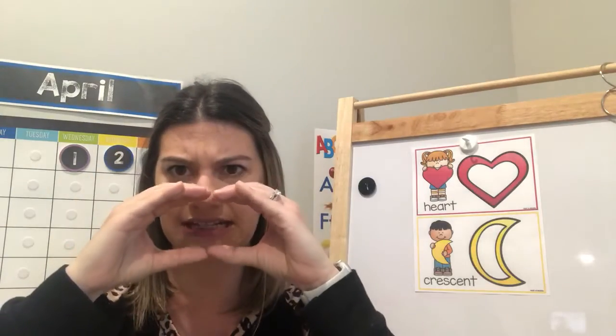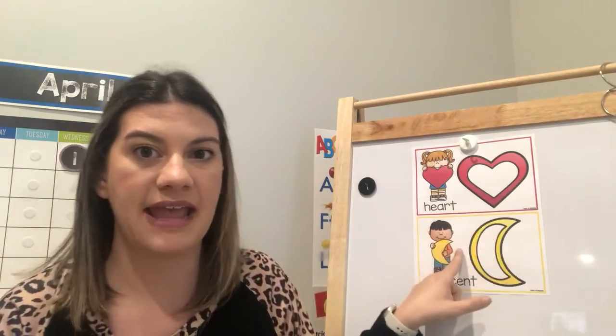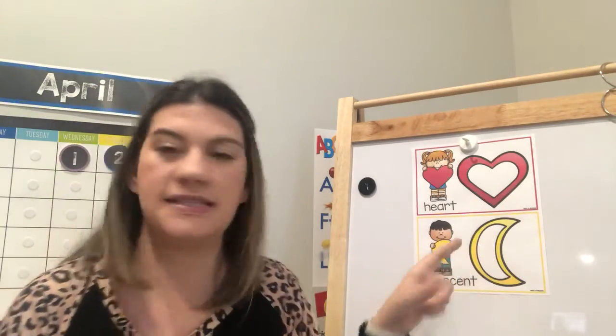Circles, squares, rectangles, diamonds — also called rhombuses — and triangles, and now hearts and crescents. I love you. See you soon. Bye!